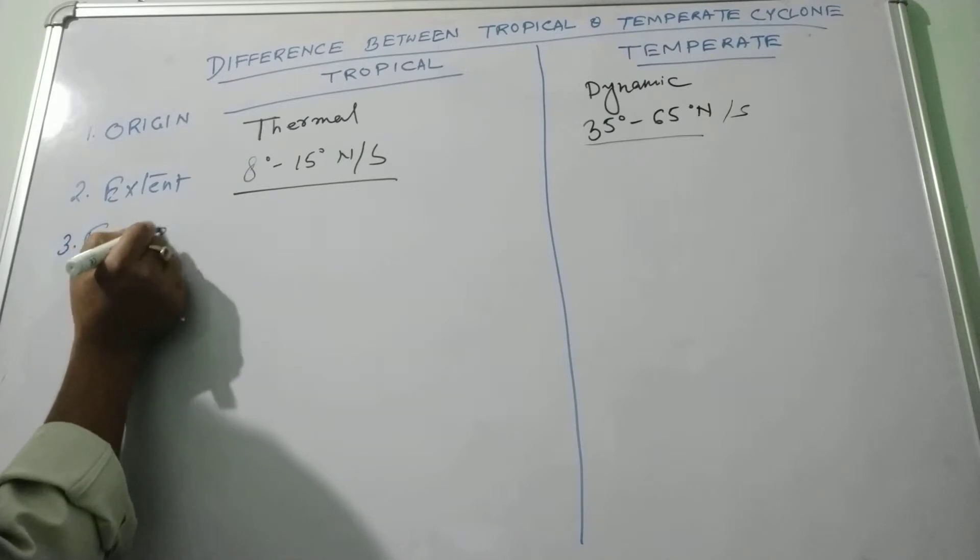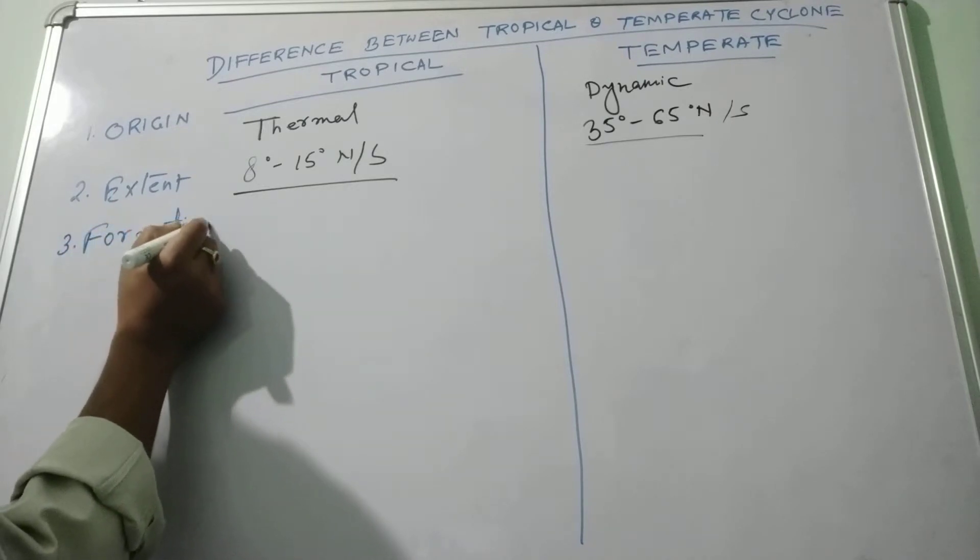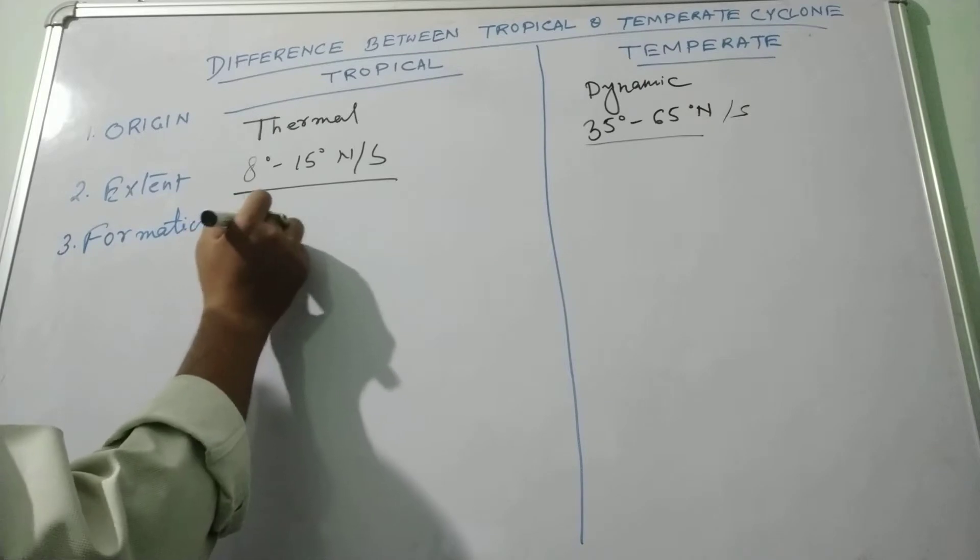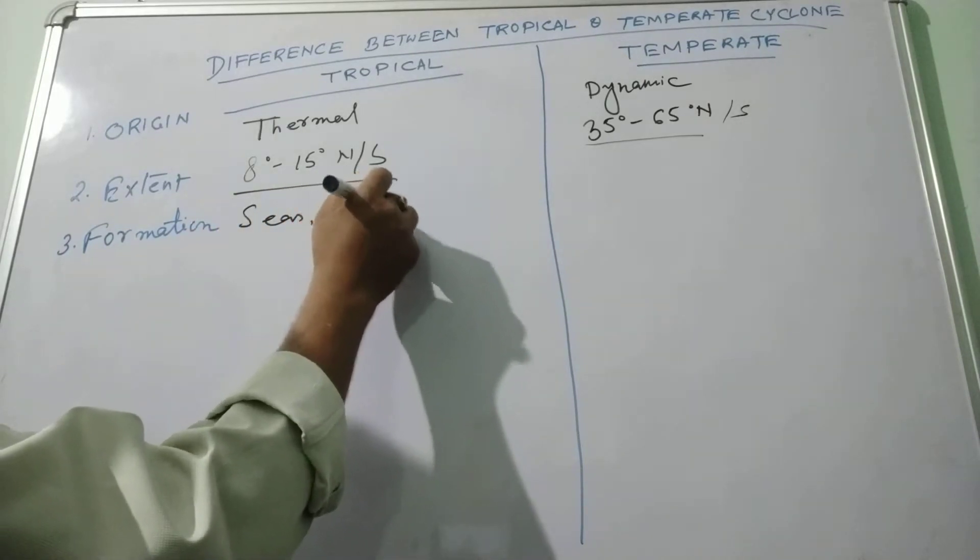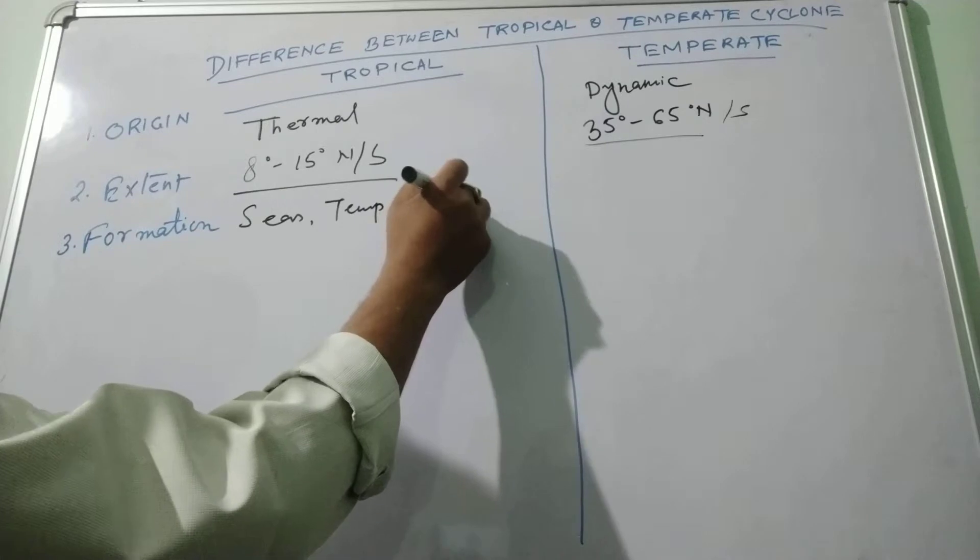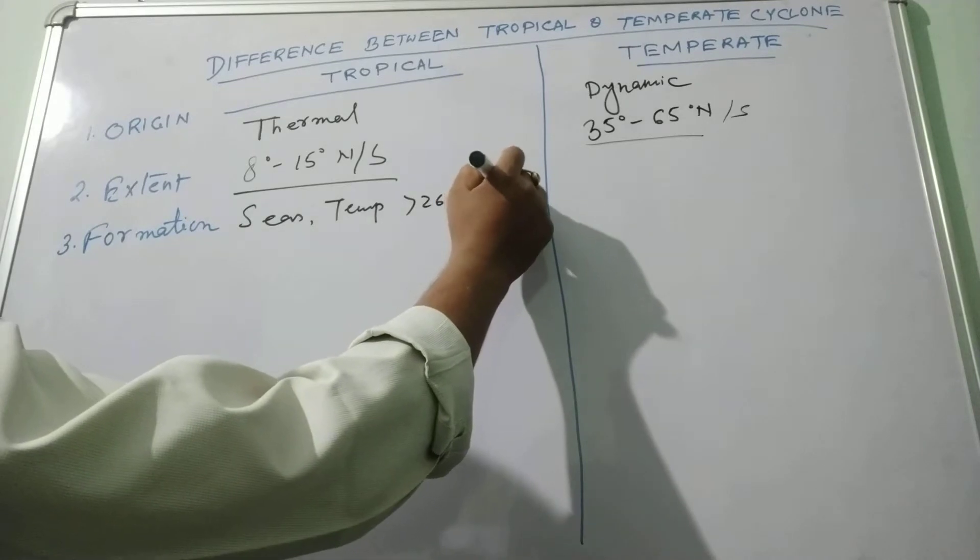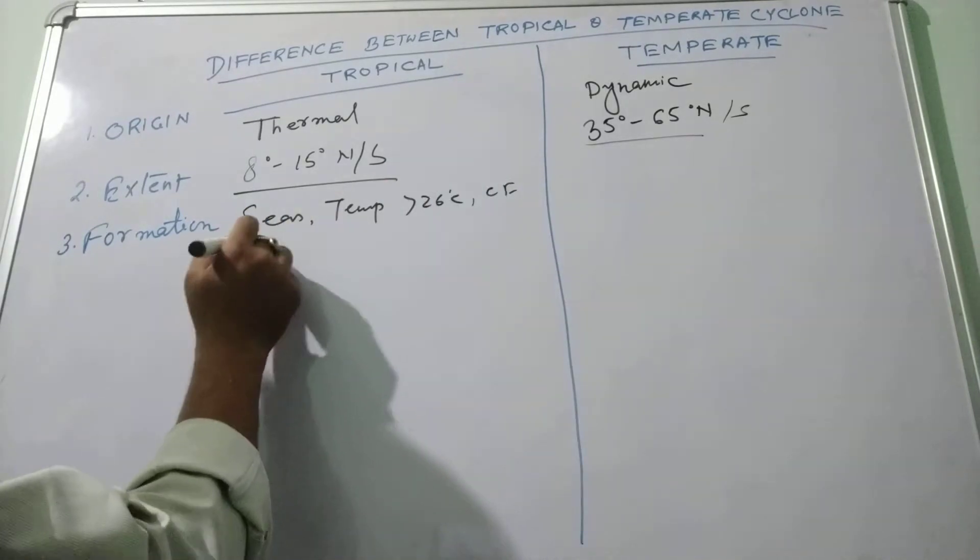Formation. In case of the formation, they form only over seas having a temperature of more than 26 degree centigrade and high Coriolis force, and dissipate at the land.